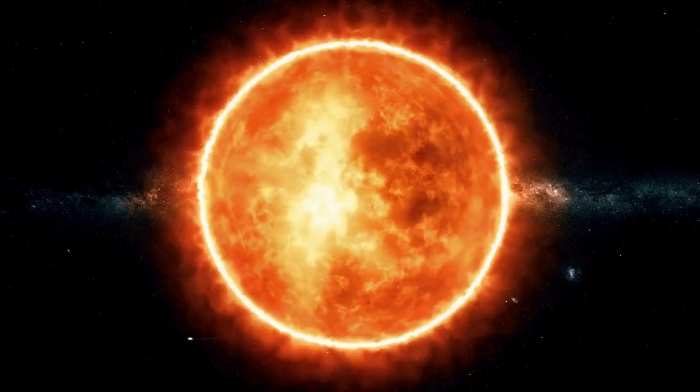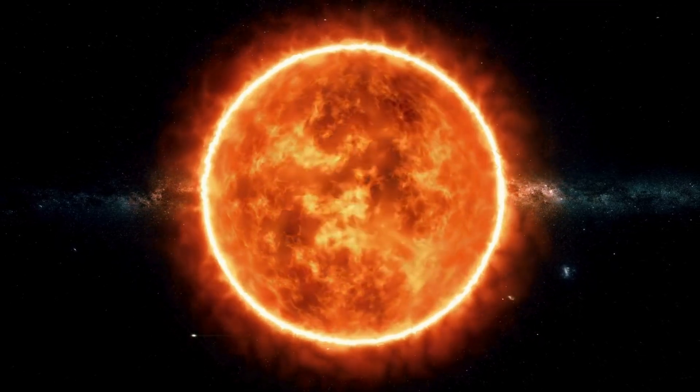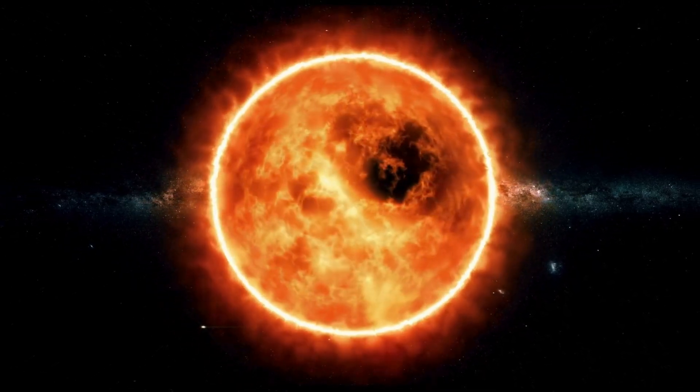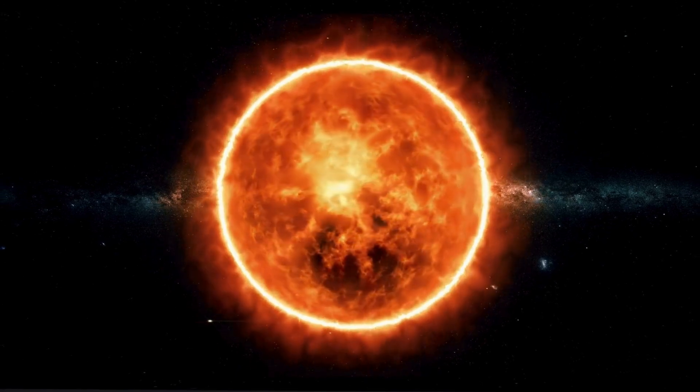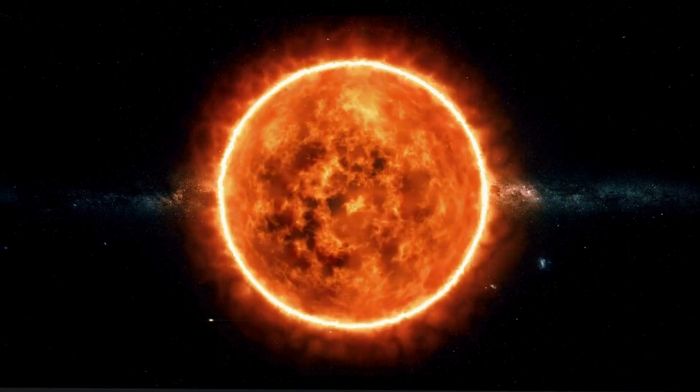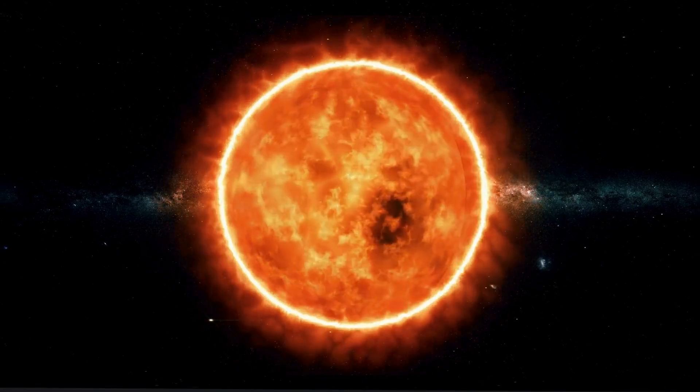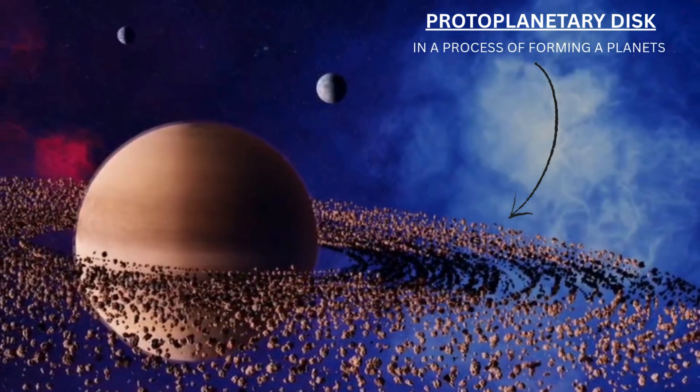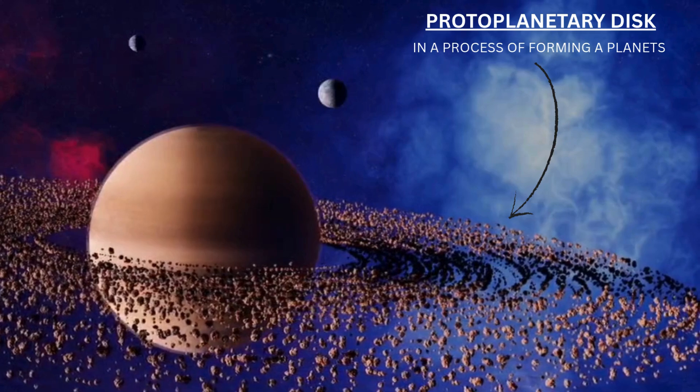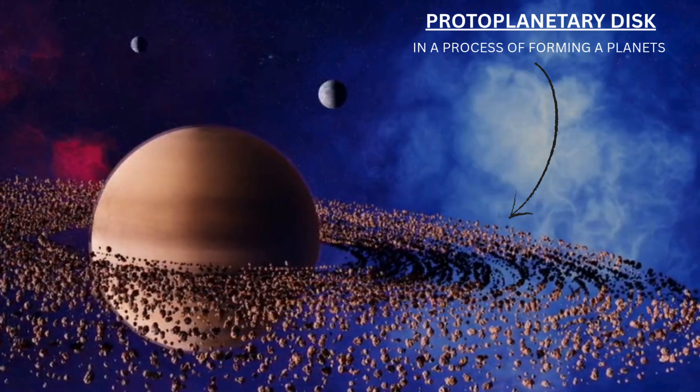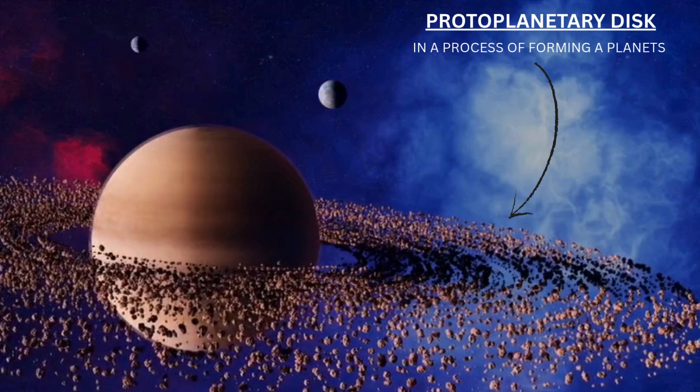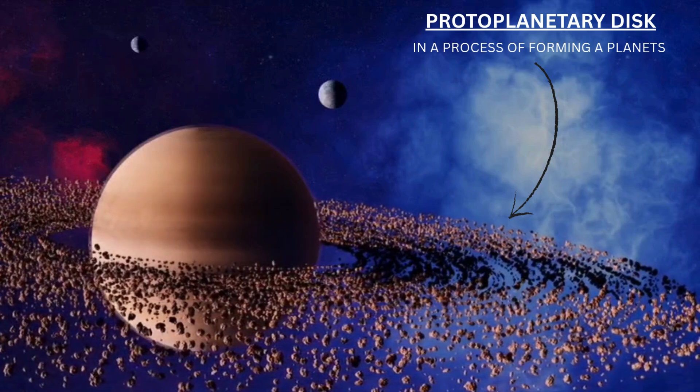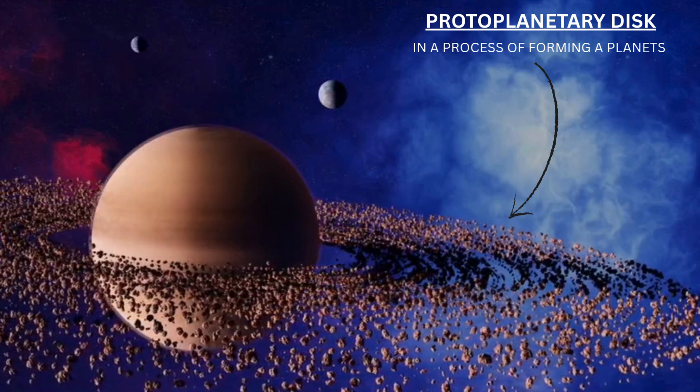The center part of this flattened disk condensed to form the Sun. The disk of dust and gases around this newly formed Sun is called the protoplanetary disk, from which new planets will form.